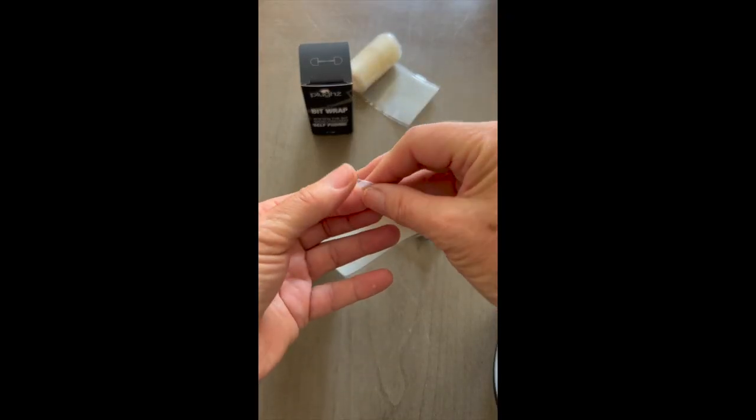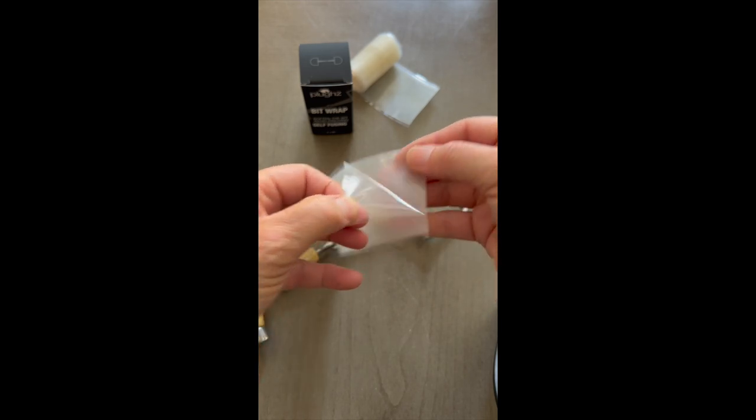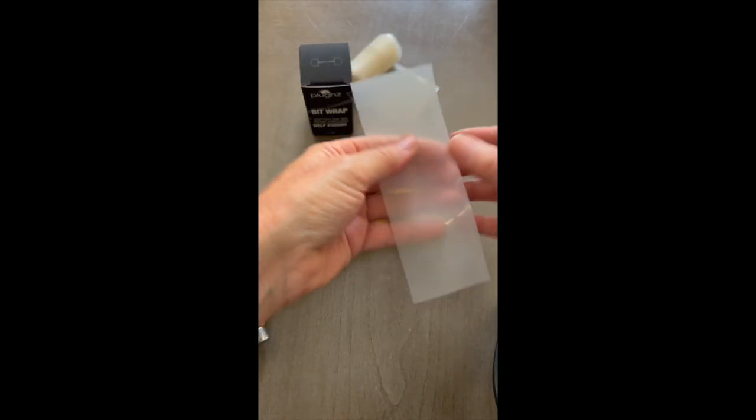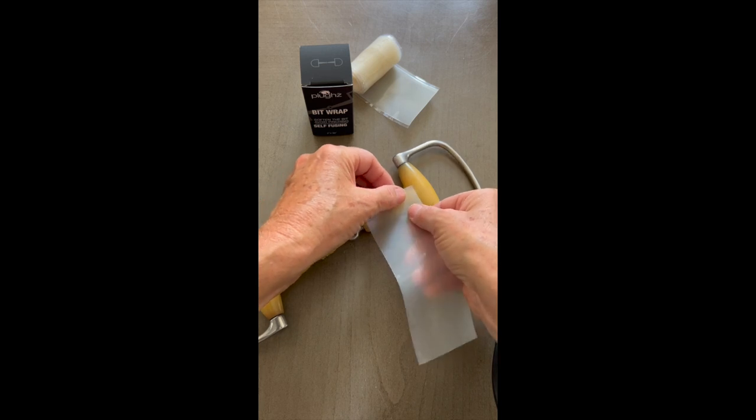Start off by cutting a five to eight inch piece. Use your discretion here. You're just trying to cover the broken parts, and your bit might need more or less depending on how damaged it is.